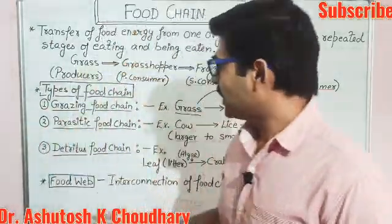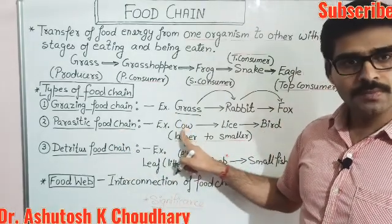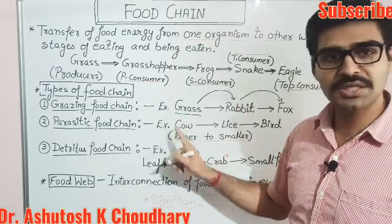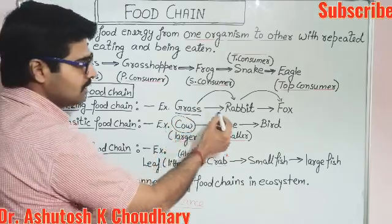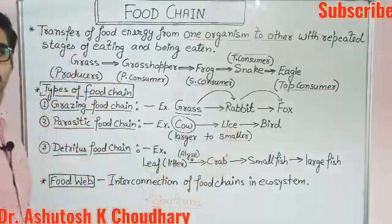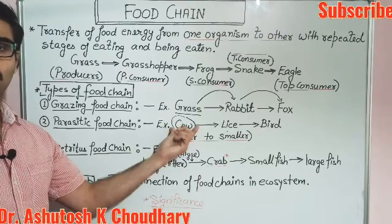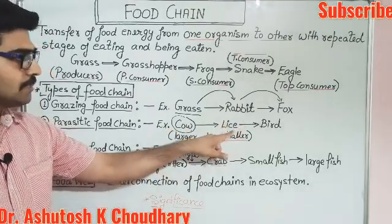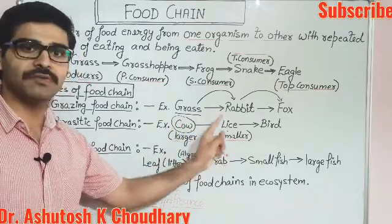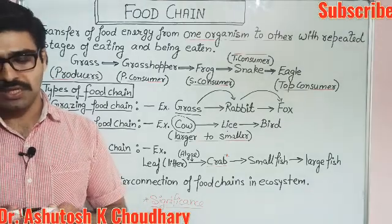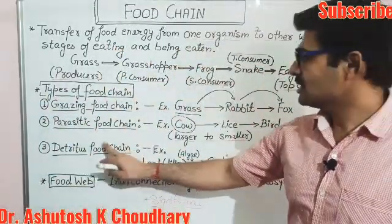The second category is the parasitic food chain. Here, the food chain starts from herbivores. For example, cow is a herbivore. On the body of the cow, there is a small insect-like animal — lice — which fulfills its nutritional requirement from the cow, just like a parasite. So here, lice is the parasite and cow is the host. This host-and-parasite relationship defines the parasitic food chain.